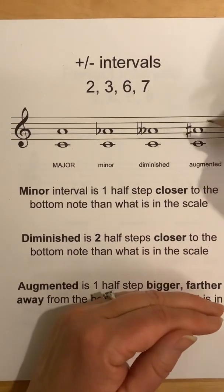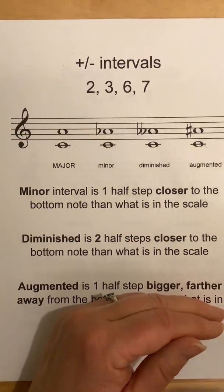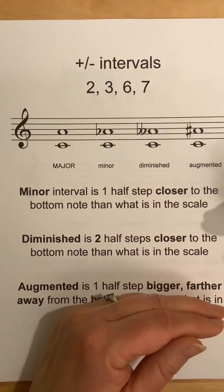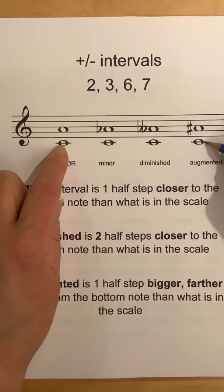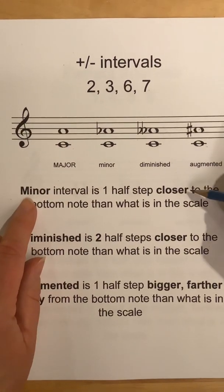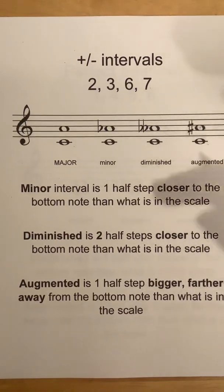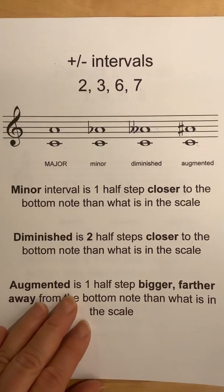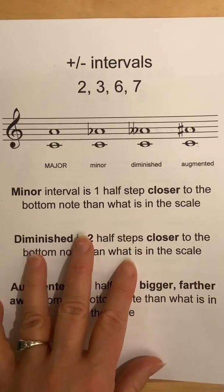Augmented means it's larger — if you've heard the term 'augmenting something,' it's been made bigger. So augmented means it's farther away by a half step. Here, instead of an A, it's an A-sharp — a half step larger. To summarize: minor is a half step closer; diminished is two half steps closer; augmented is one half step bigger, farther away from the bottom note. Those are the four different types of intervals with the major-minor intervals.